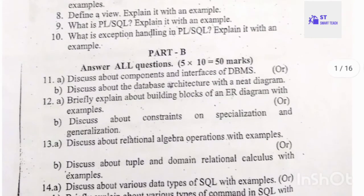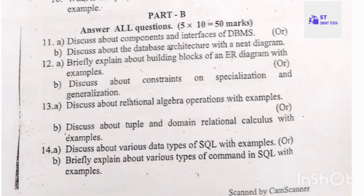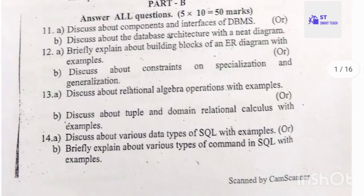2018 Part B: 11A — discuss about components and interfaces of DBMS; 11B — discuss about database architecture with a neat diagram. Twelfth: briefly explain building blocks of ER diagram with examples; discuss about constraints on specialization and generalization. Thirteenth: discuss about relational algebra operations with examples; discuss about tuple and domain relational calculus with examples. Fourteenth: discuss about various data types in SQL with examples.